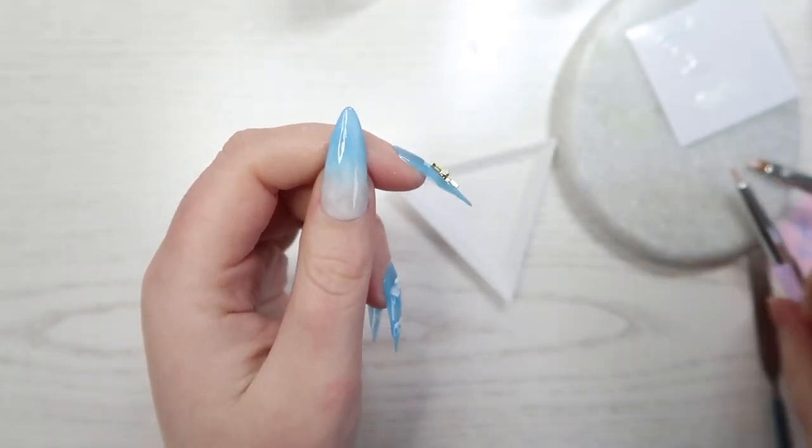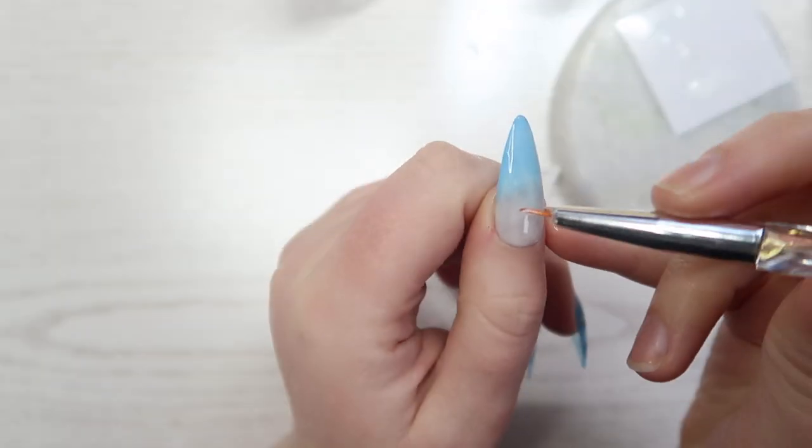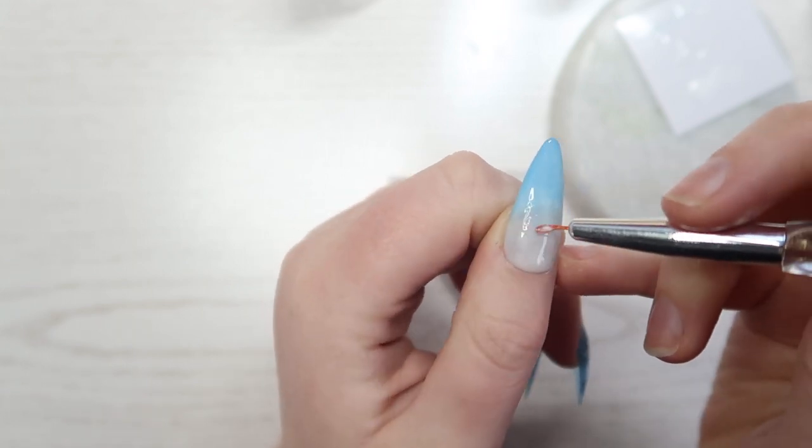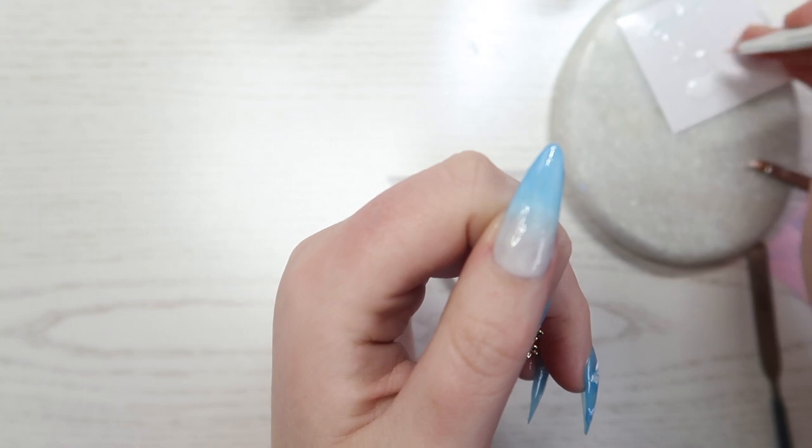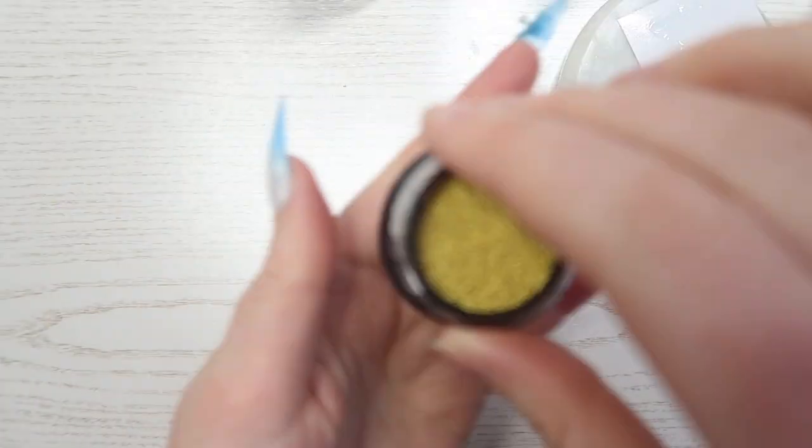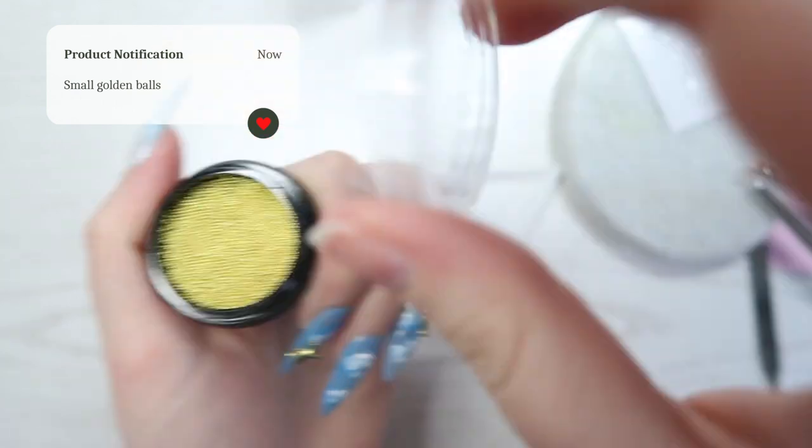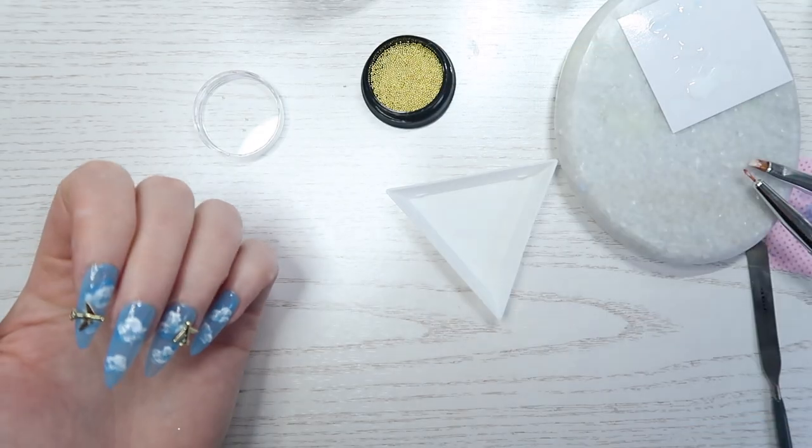It's finally time to decorate the thumb. I am first putting on a layer of the gel tip adhesive so I can glue on these golden little small balls. I don't really know what they're called.